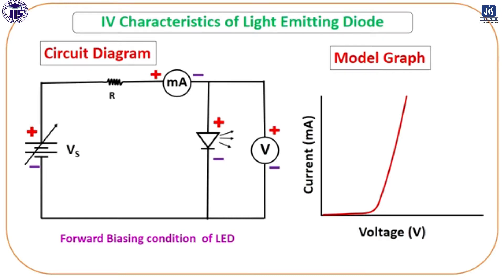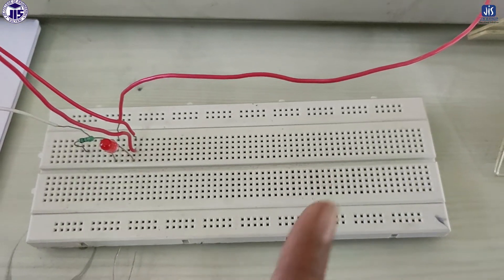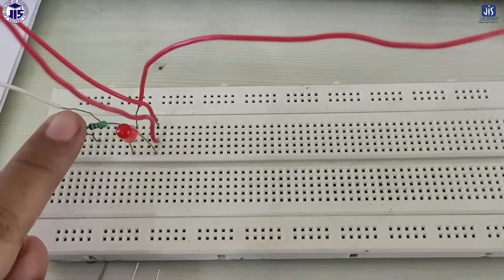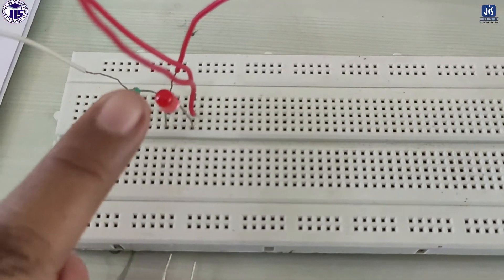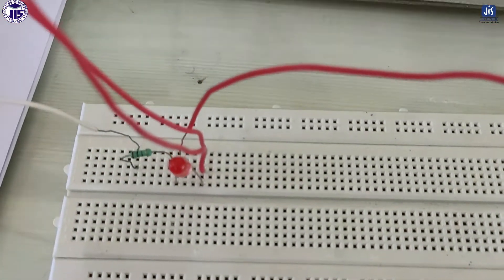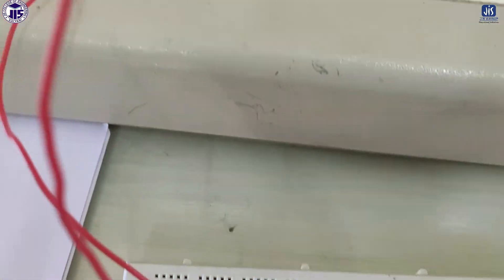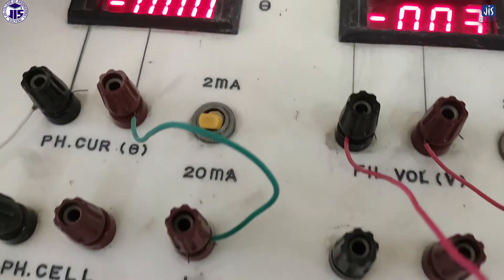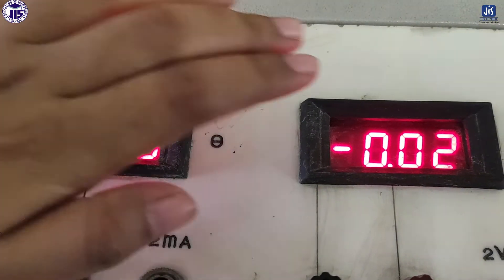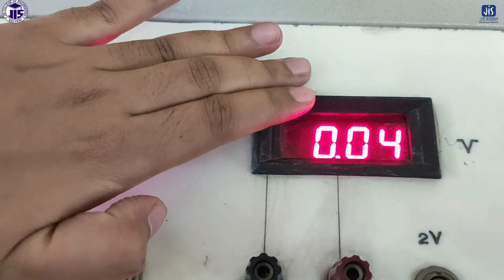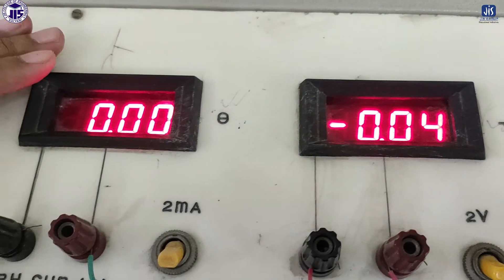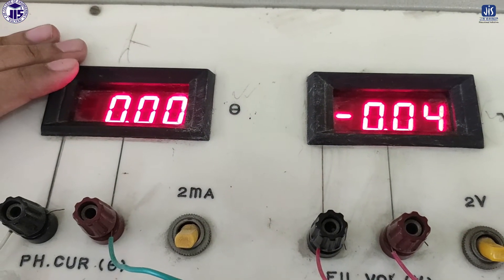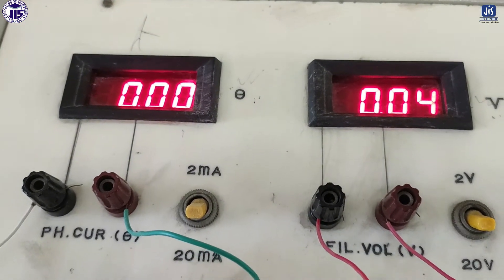Now I will explain it with the circuit diagram. In this experiment, we need a breadboard, a resistance, an LED, wires, a voltmeter, and an ammeter. This one is a voltmeter and this one is your ammeter.